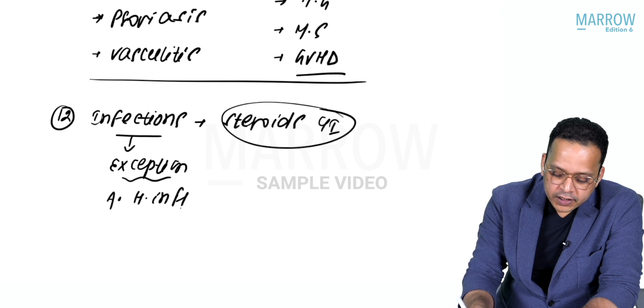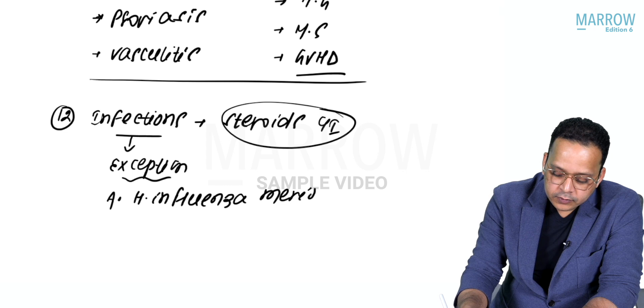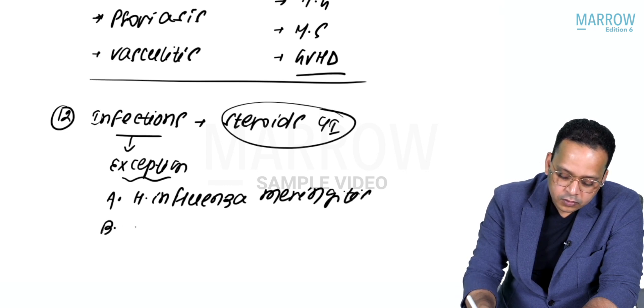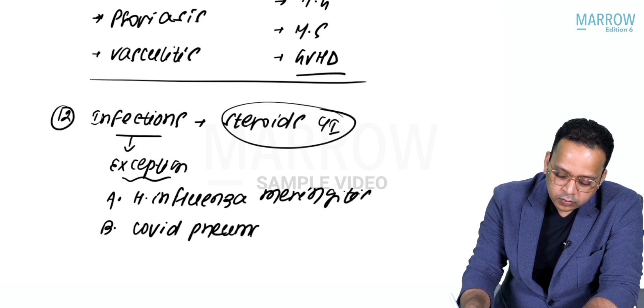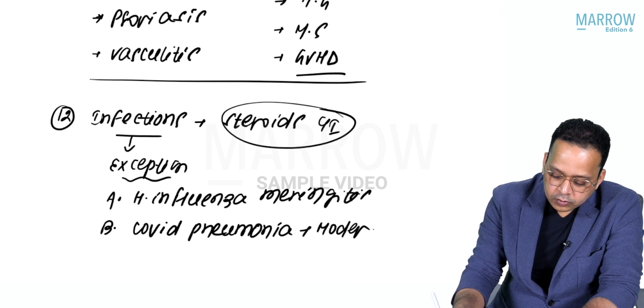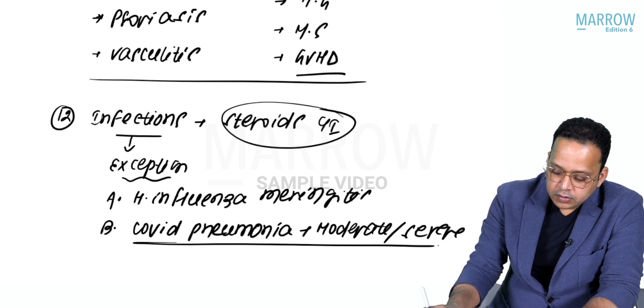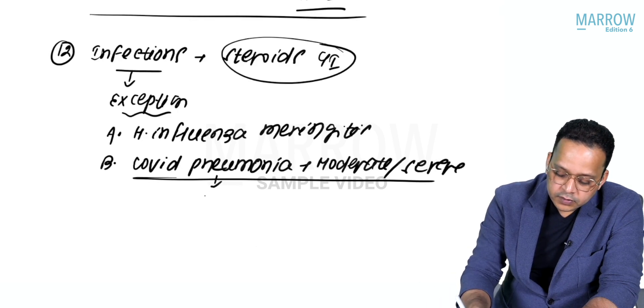Like H. influenzae meningitis, COVID pneumonia which is either moderate to severe - there we use steroids and steroids are life-saving drugs.